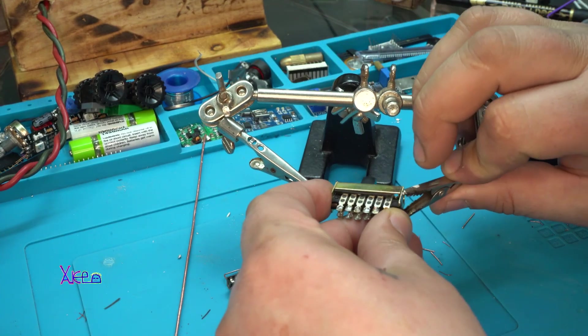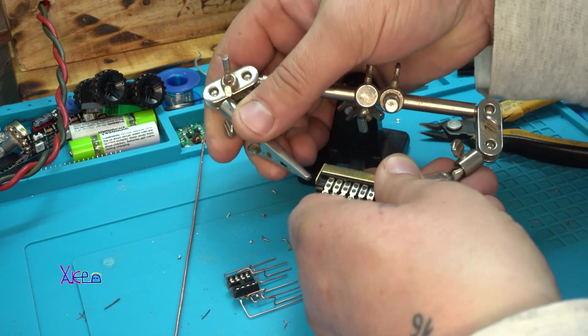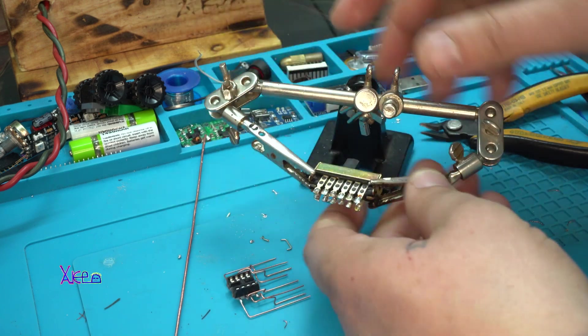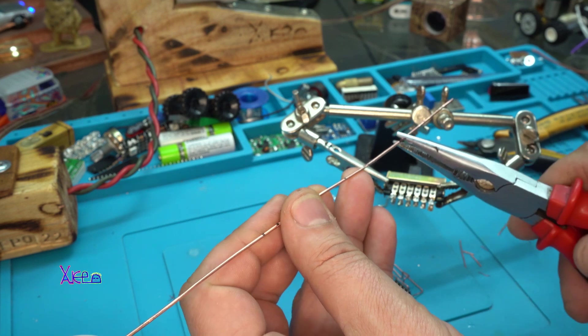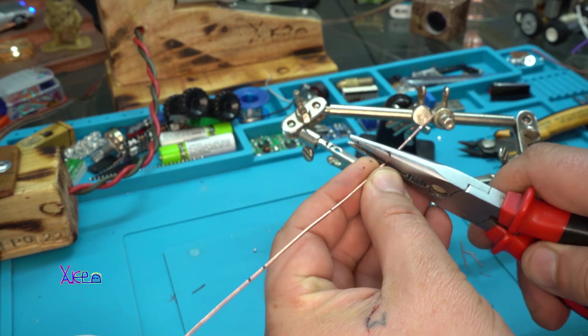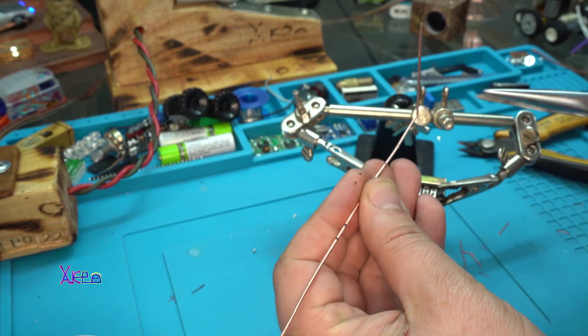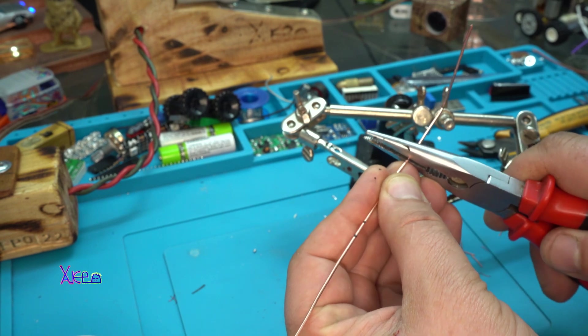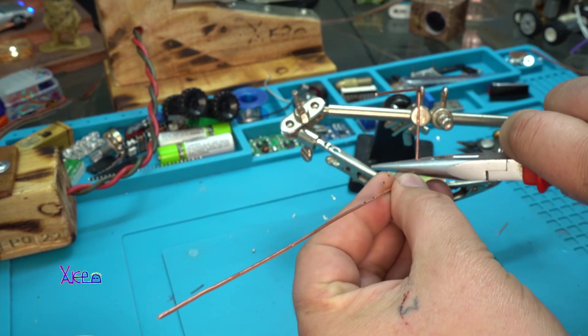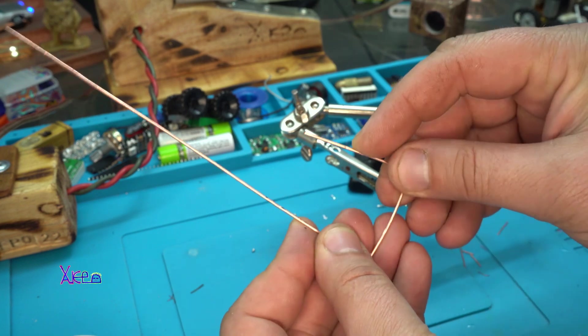To mention that for making this LED chaser in skeleton version, I'm using ATtiny85 microchip that needs to be programmed with the LED chaser code. The code you can download in the description below.